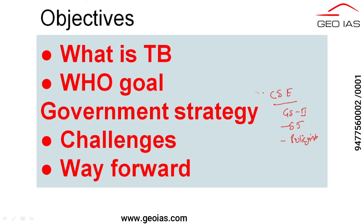In this session, we are going to understand what TB means, what are the types of TB, what is the goal set by the WHO, and what are the different government strategies from 1961 to 2022 - several campaigns started by the Government of India against TB. Then we will try to understand the challenges and see the way forward.